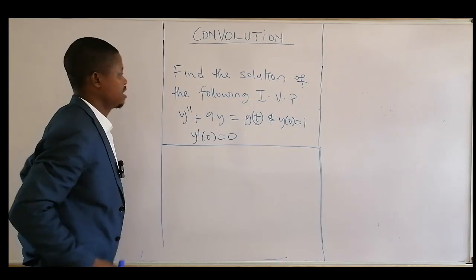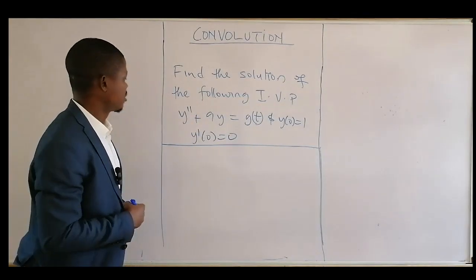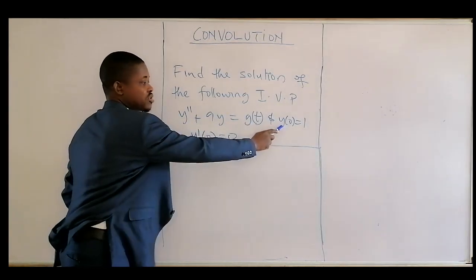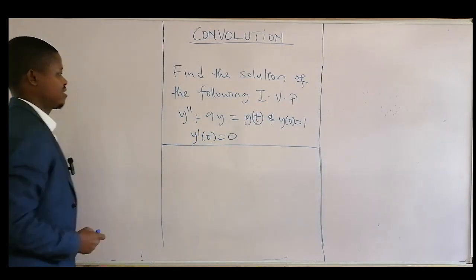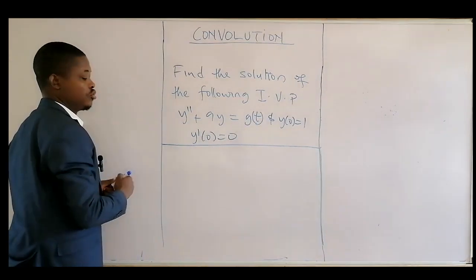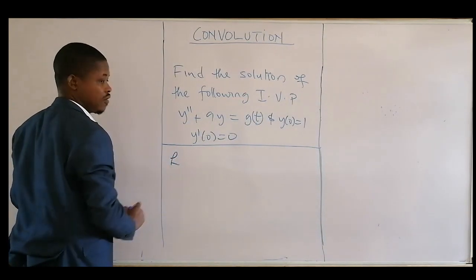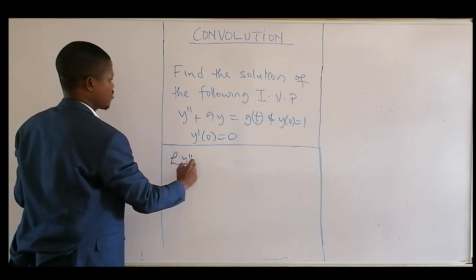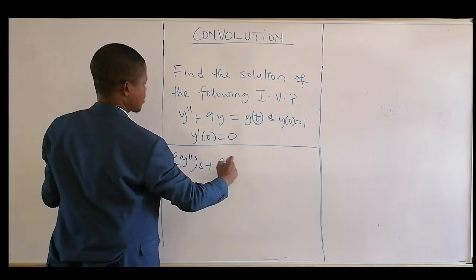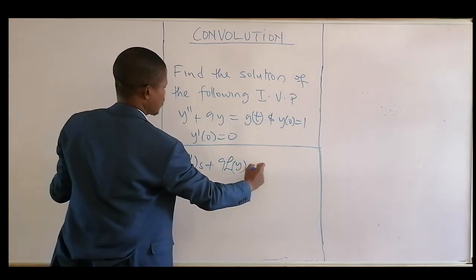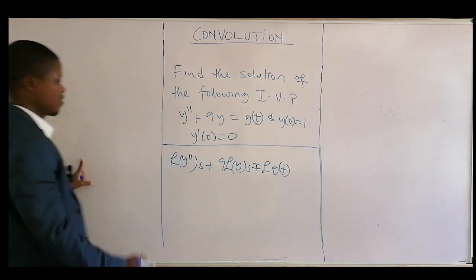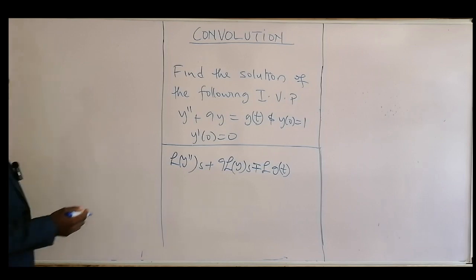We have to find the solution of the following initial value problem: y'' + 9y = g(t), with conditions y(0) = 1 and y'(0) = 0. Since this is a differential equation, the first thing to do is to take the Laplace transform of the equation: Laplace of y'' + 9 times Laplace of y equals Laplace of g(t).